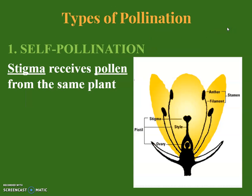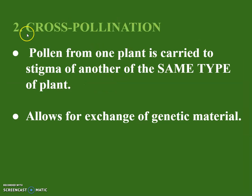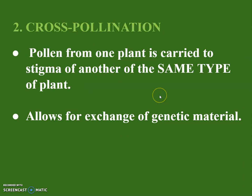There are different types of pollination. Self-pollination is where the stigma receives pollen from the same plant — if the sticky stigma receives pollen from the anther on that same plant, it self-pollinates. Cross-pollination is when pollen from one plant is carried to the stigma of another plant of the same type, such as when a bee carries pollen between two plants. Cross-pollination allows for the exchange of genetic material, so offspring are more genetically different than those from self-pollination.